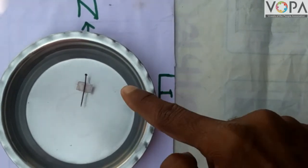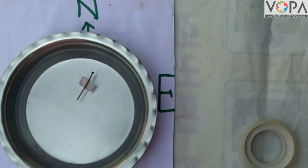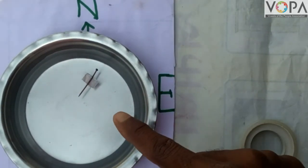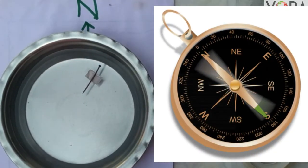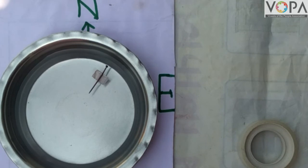Look at this - the magnetic needle settles in a north-south direction. So in this way we can prepare a magnetic needle.